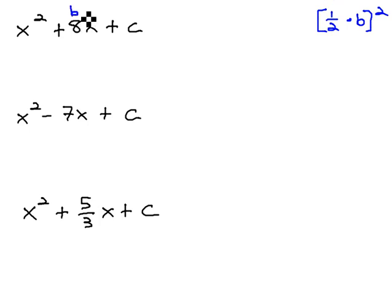We'll call this middle number in front of x our b. So for this first equation, we have an 8. So we need to find one half of 8 and then square the answer. Well, half of 8 is 4, and 4 squared is 16. This means if this last number was a 16, we would have a perfect square.